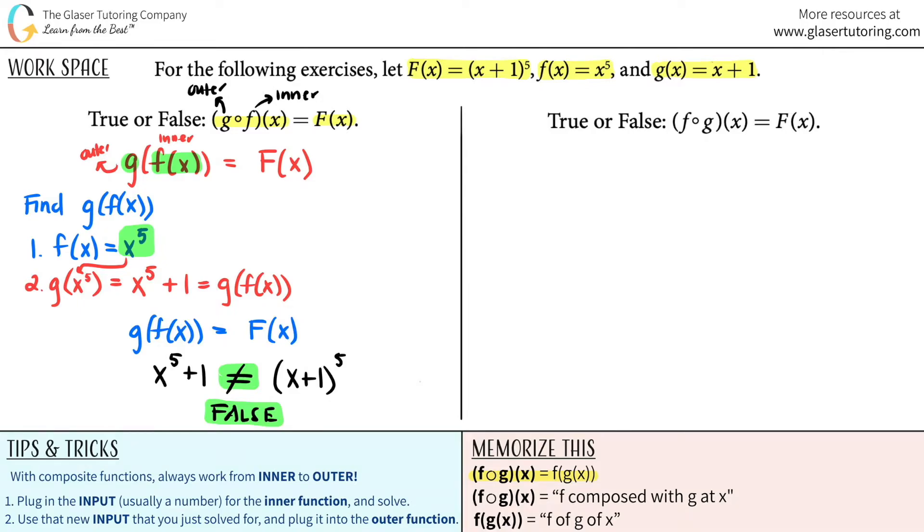Now let's try it again. True or false? Is F composed with G at X equal to capital F of X? So first thing I'm going to do is I'm going to take this out. And from what we talked about before, this would just be F of G of X. Does this equal capital F of X? Well, let's see. The first thing we got to do is we got to find what that composite function is. We got to find F of G of X.